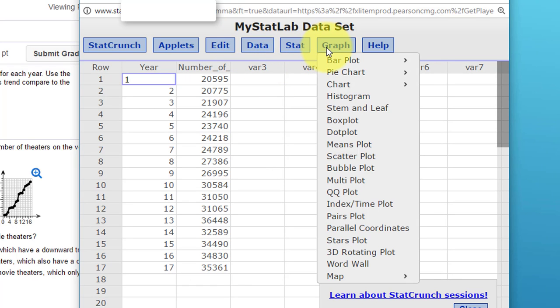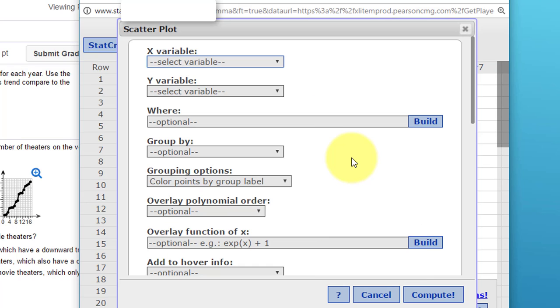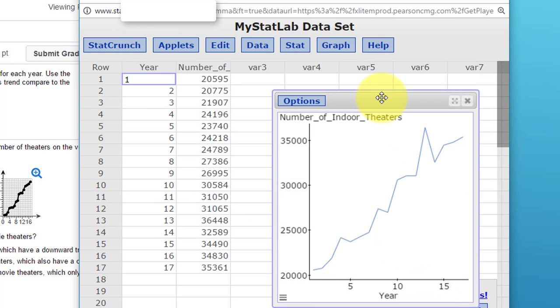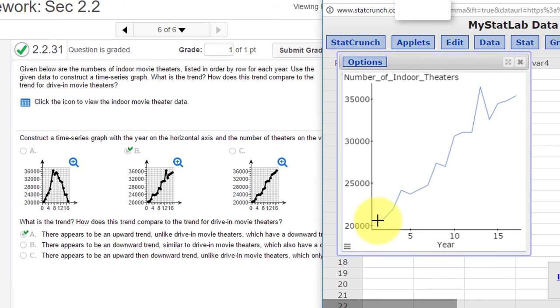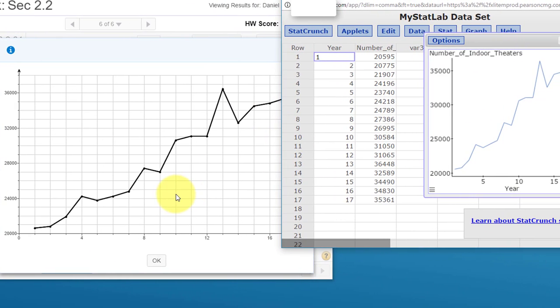How do we do that? Looking under Stat for time series—we don't have that. But we can start with a scatter plot, similar to the one we just did. We'll select our x-axis as the year and the y variable as number of indoor theaters. Then for display, instead of points this time, we want a line. Click on compute, and we've got our line graph showing a pattern here. If I blow that one up, they look very similar.